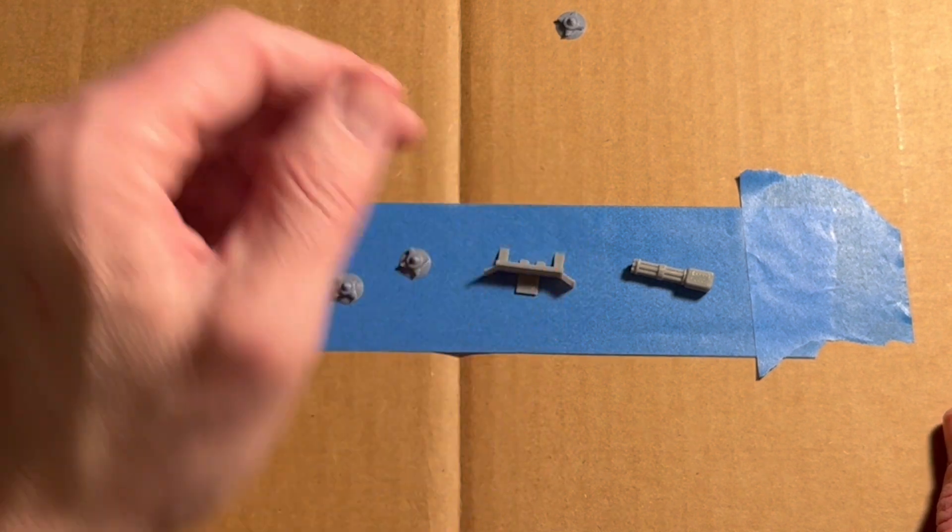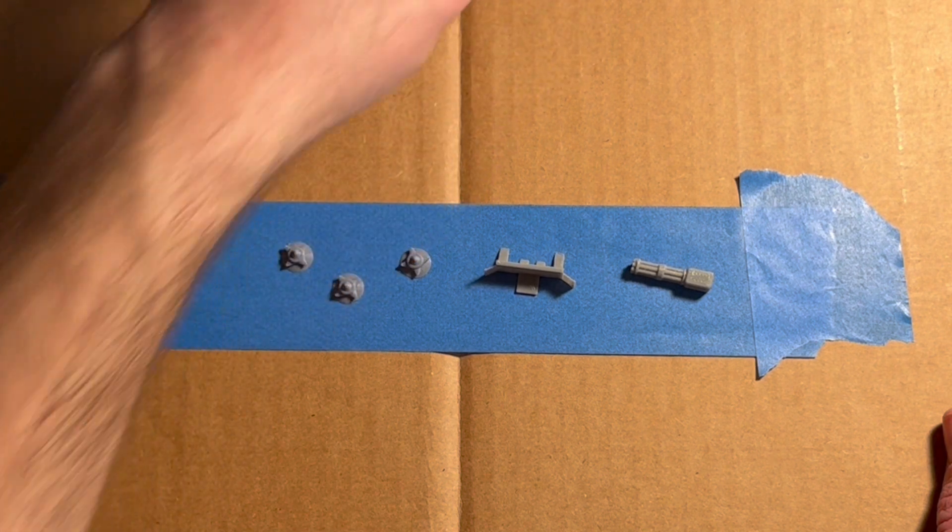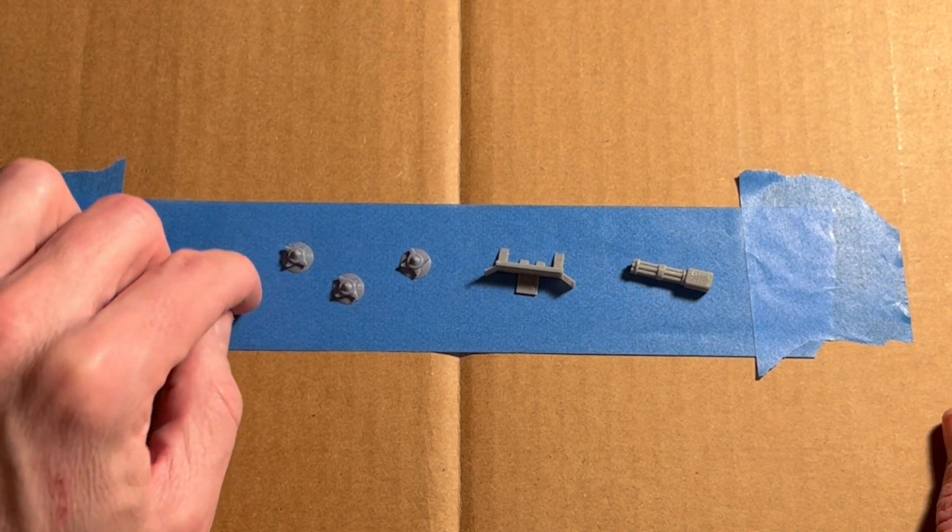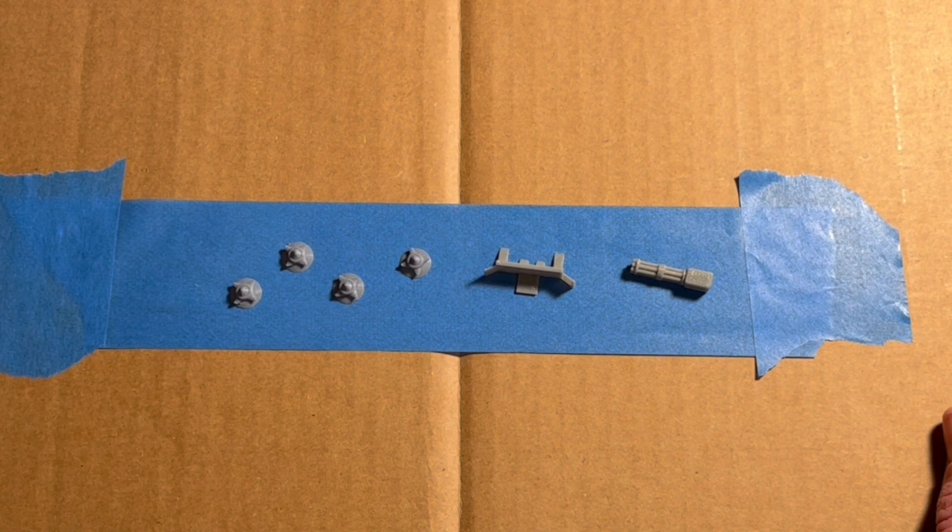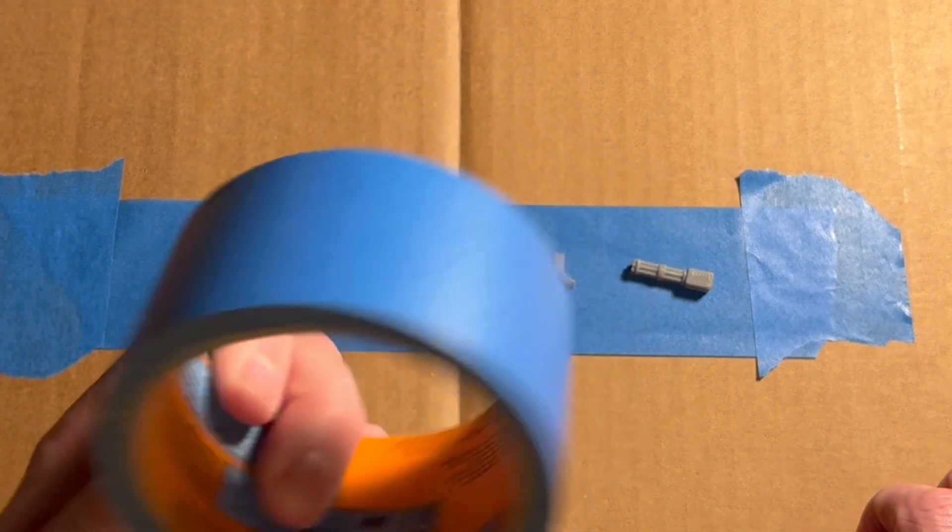It'll still be sticky on the area immediately under it, and then I can prime the underside as well. Maybe the same thing with this gun here. So now these pieces are ready to be primed. Very easy. Blue tape, it's awesome.